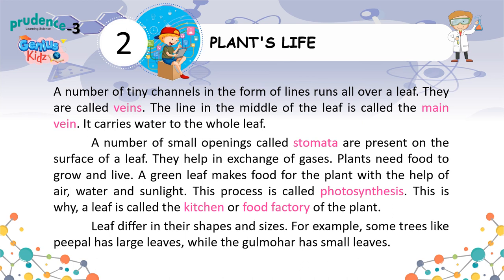Plants need food to grow and live. A green leaf makes food for the plant with the help of air, water and sunlight. This process is called photosynthesis. This is why a leaf is called the kitchen or food factory of the plant. Leaves differ in their shapes and sizes. For example, some trees like peepal have large leaves while the gulmohar has small leaves.